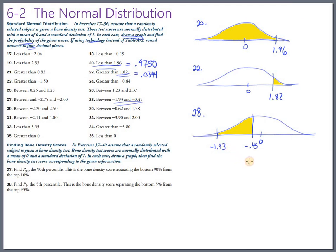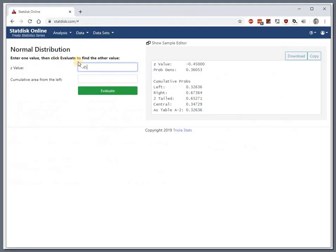So we need 0.3264. And that's everything to the left of 0.45. And we need to subtract off this little tail bit. What's to the left of negative 1.93? To the left of negative 1.93. And that's just a little bit 0.0268.